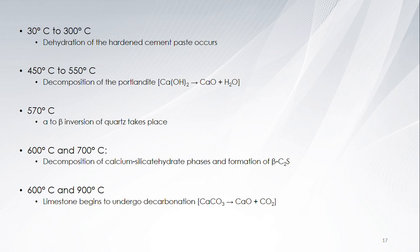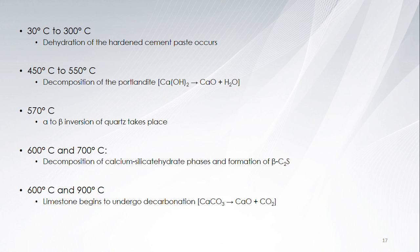Concrete undergoes different reactions at different temperatures. From 30 to 300 degrees Celsius, water is lost and the hardened cement paste is dehydrated. From 450 to 550 degrees Celsius, Portlandite or calcium hydroxide is decomposed, therefore increasing porosity, hence decreasing strength and elastic modulus of the weakening hydrates. At 570 degrees Celsius, inversion of quartz takes place, as the low temperature alpha phase is converted to a higher temperature beta phase, which increases the volume and hence accelerates the disintegration process of the hydrates. From 600 to 700 degrees Celsius, calcium silicate hydrate phases are decomposed. From 600 to 900 degrees Celsius, limestone undergoes decarbonation.